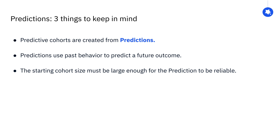Before you can create a predictive cohort, you first have to create a prediction. In a prediction, Amplitude uses the past behavior of users to build a mathematical model predicting which users will do the future outcome you specify and which users won't. It's important to note that predictions work well only in specific situations, including having a large enough starting cohort size so that you're able to draw reliable statistical inferences.